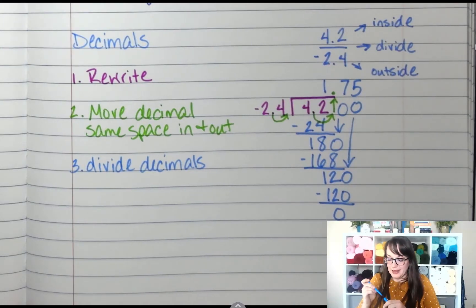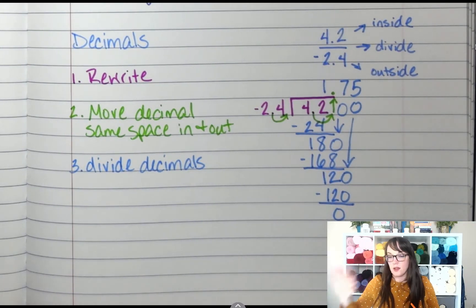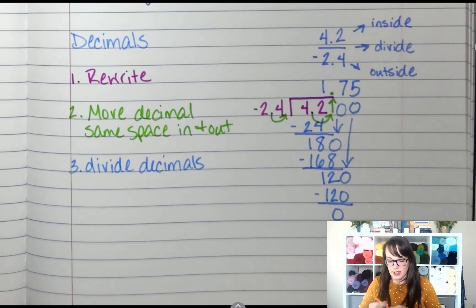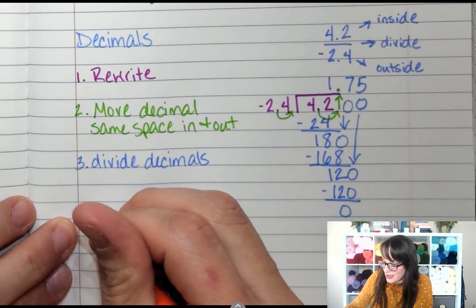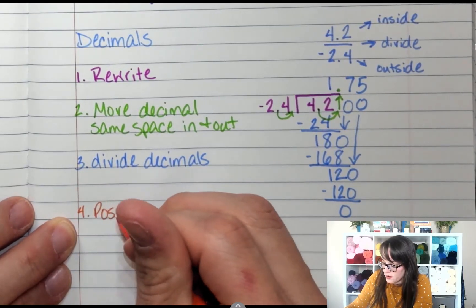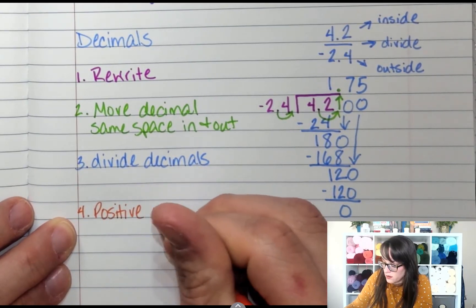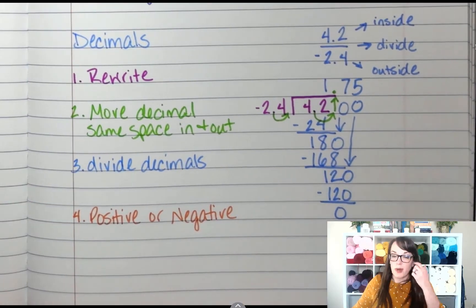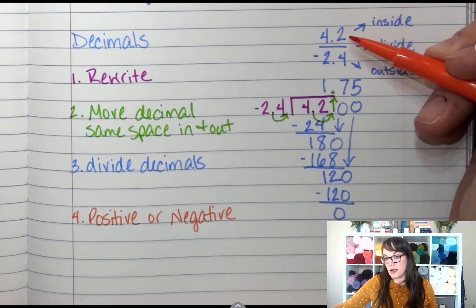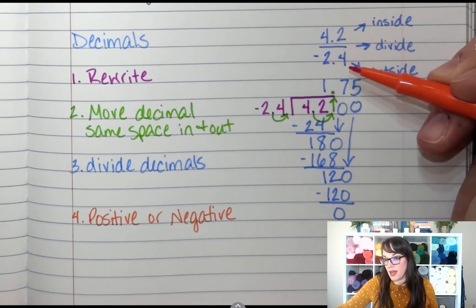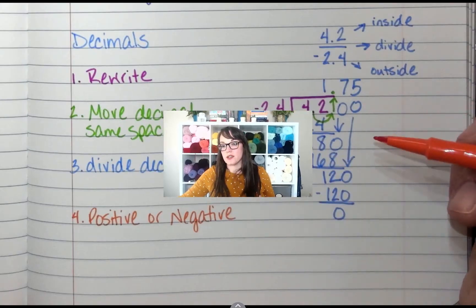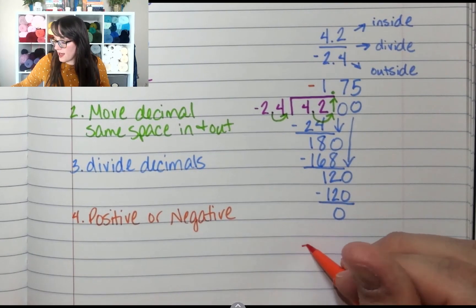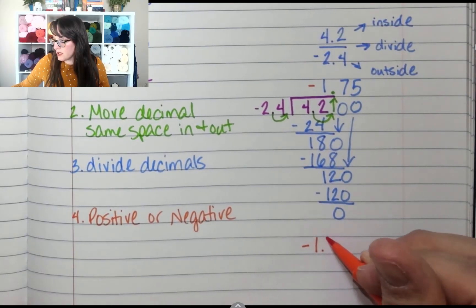Now my last step—very last step—also, we were dealing with decimals, so we want a decimal answer. We have to assign positive or negative. Is this number a positive or is it a negative? I had a positive divided by a negative, so my answer is going to be negative. So I have negative 1.75.